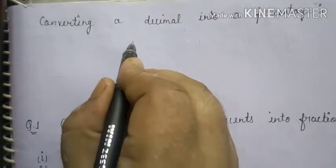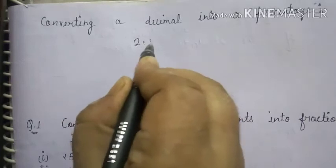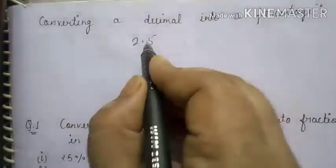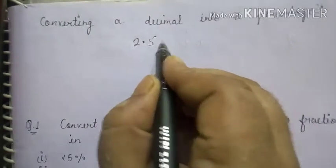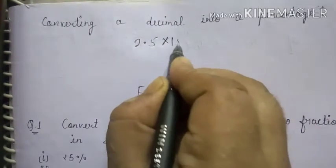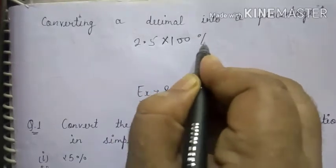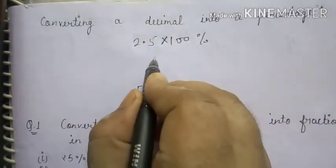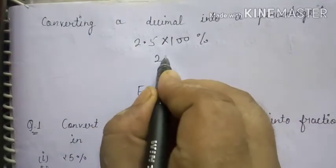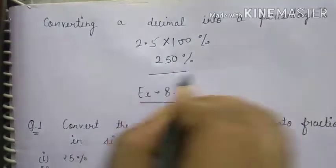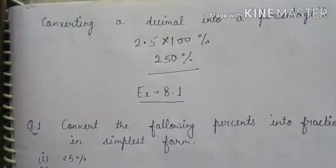Now converting a decimal into a percentage: if we have 2.5 and have to convert to percentage, we multiply by 100 and use the percent sign. So it will be 250%.